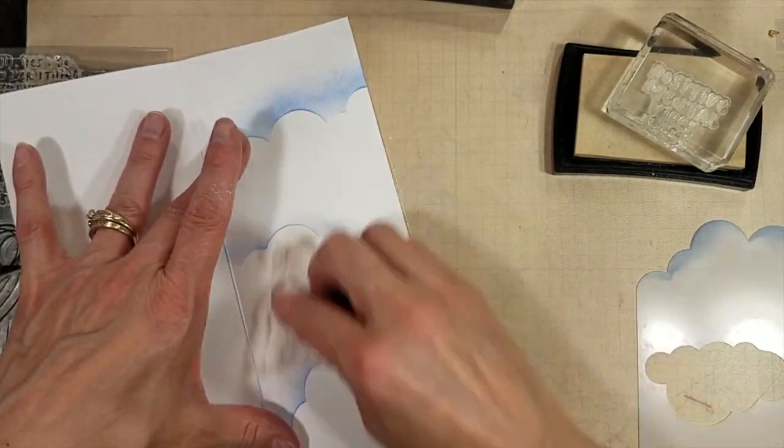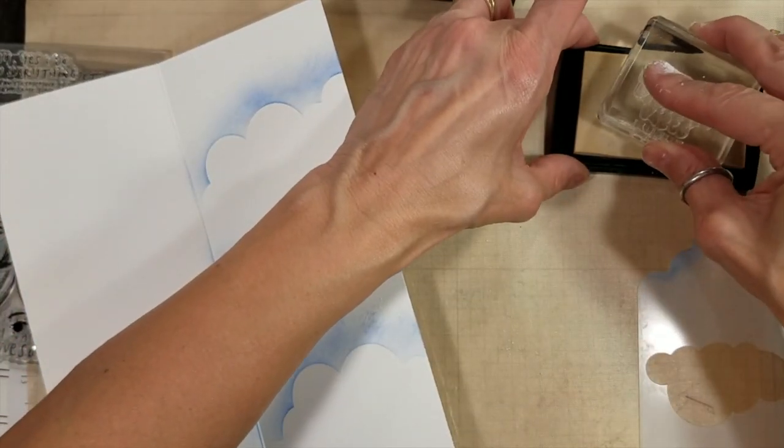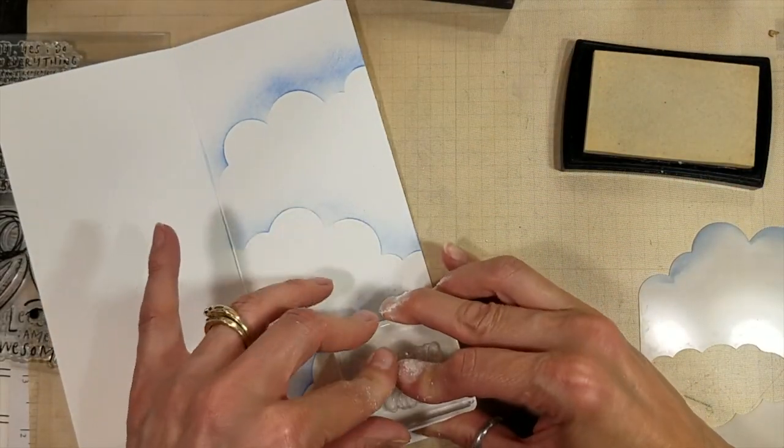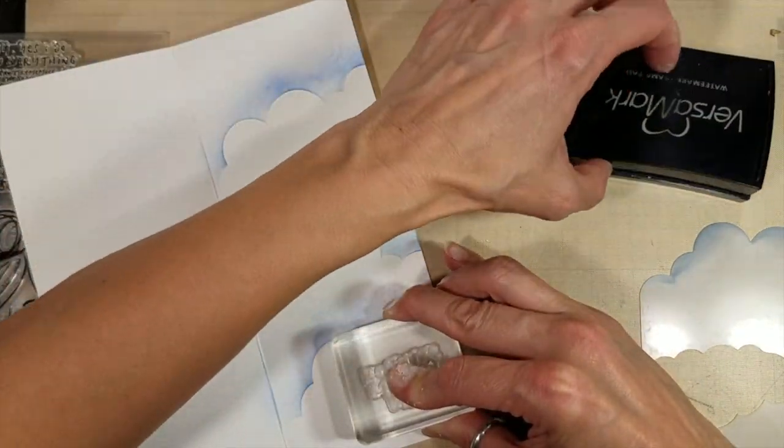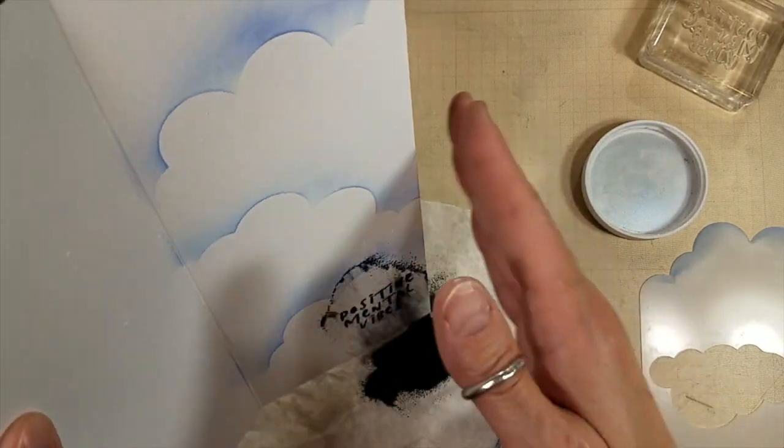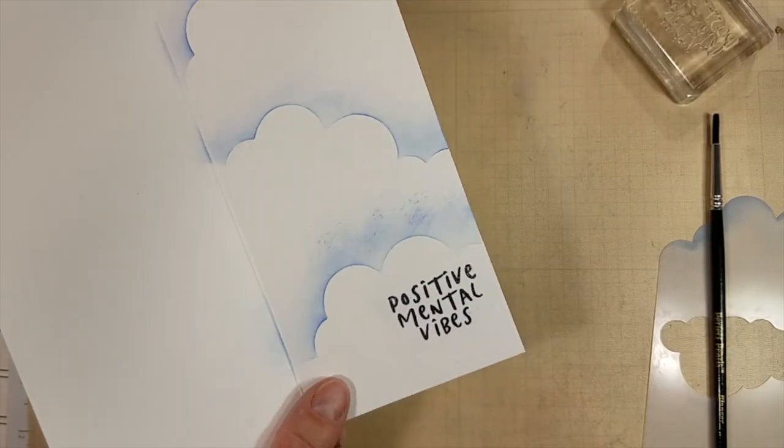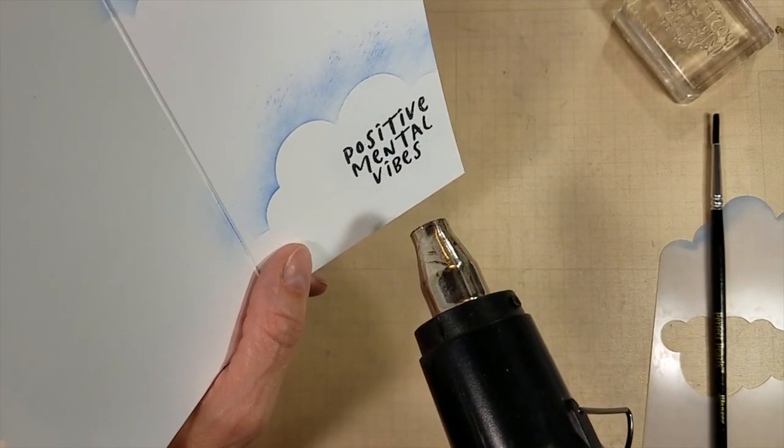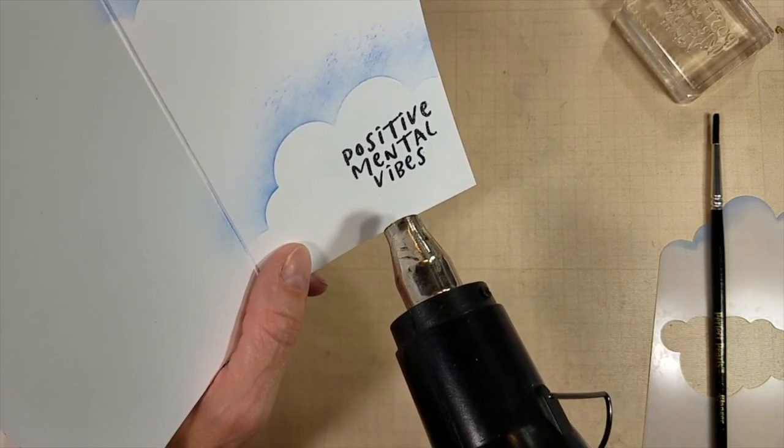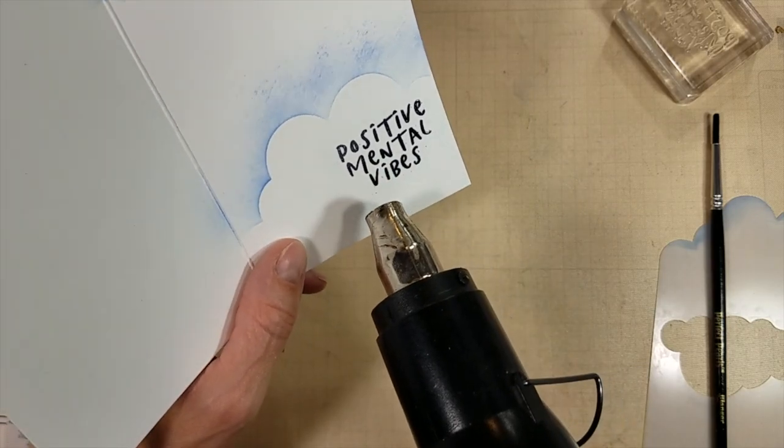I am inking up the stamp really good using my powder tool, because I learned my lesson earlier. And I'm going to stamp the sentiment on the inside that says positive mental vibes or something like that. So, yes, positive mental vibes. I'm going to heat set that. I also use the same, so this entire card for this card, I use the same embossing powder. I have a lot of embossing powder. I love to emboss.